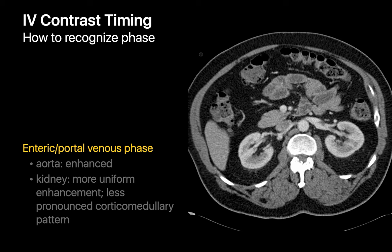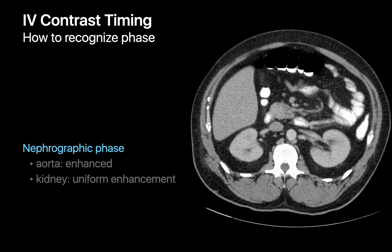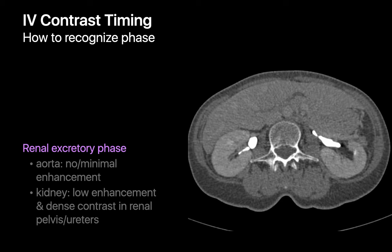If the aorta is enhanced and the kidneys are more uniformly enhanced, though a slight corticomedullary pattern is still discernible, you're looking at an enteric or portal venous phase scan. If the aorta is enhanced and the kidneys are very uniformly enhanced, you're looking at a nephrographic phase scan. If there is minimal or no aortic enhancement, renal parenchymal enhancement is subtle, and there's dense contrast within the renal pelves and ureters, you're looking at a renal excretory phase scan.